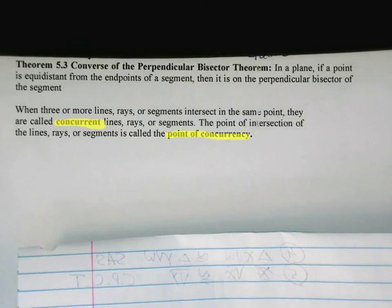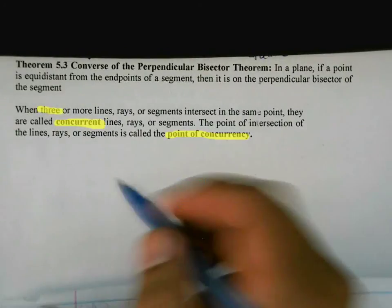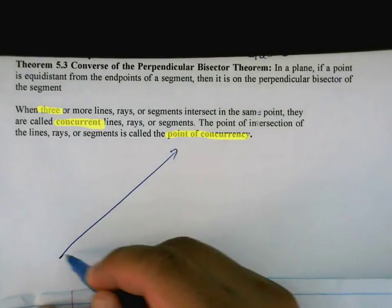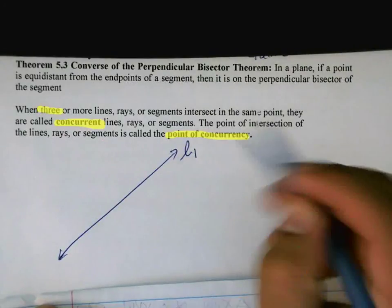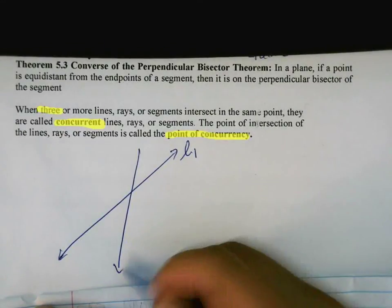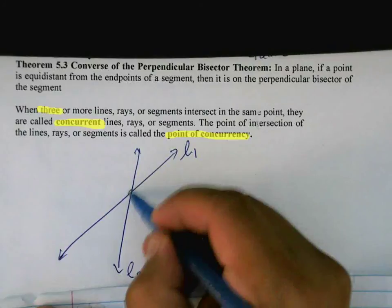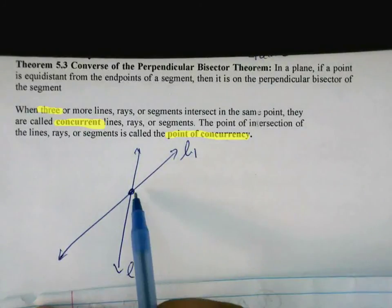So for example, if I have a line here, this is line one. And then I have another line here, this is line two. And clearly they intersect. Well, this right now is not the point of concurrency. This is the point of intersection.